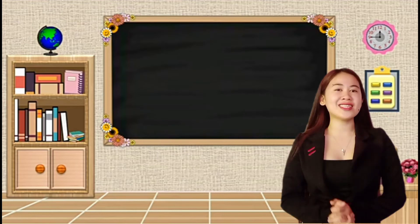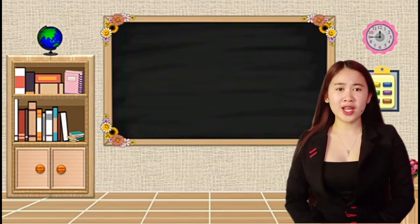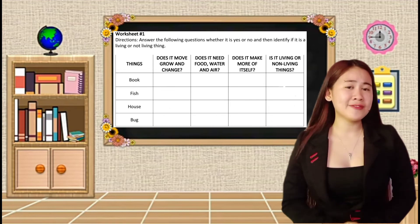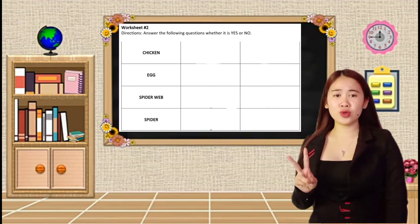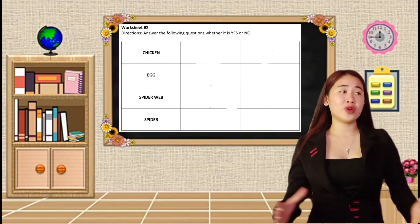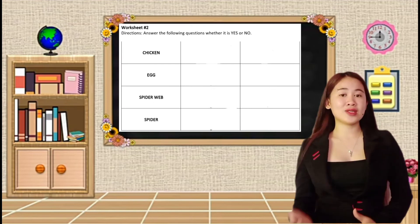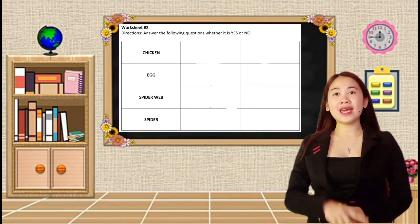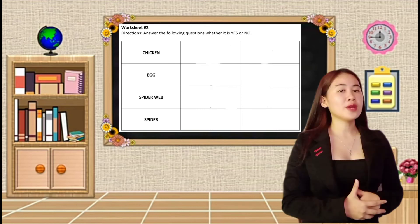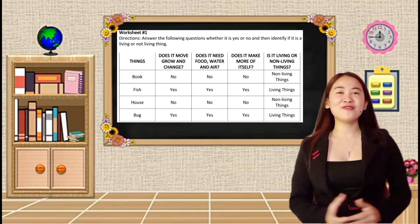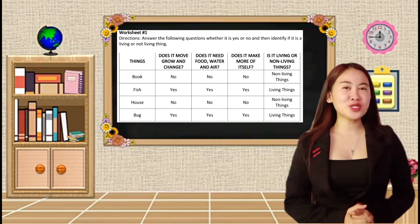Please get one whole sheet of paper. For the worksheet number one, answer the following questions whether it is yes or no. And then identify if it is living or non-living things. For the worksheet number two, all you have to do is to answer the following questions whether it is yes or no. Are we all clear? No questions? Yes? So, yes. Copy and answer. So, your timer starts now. Are you all done? Okay, very good. Please exchange your papers to your seatmate.